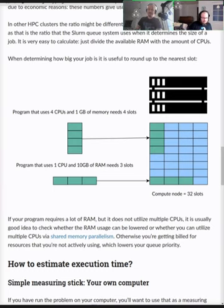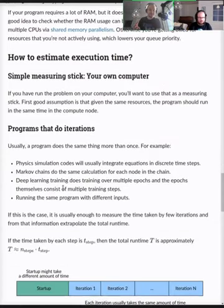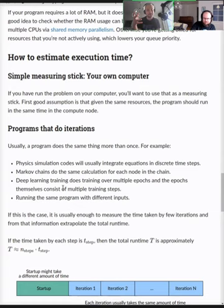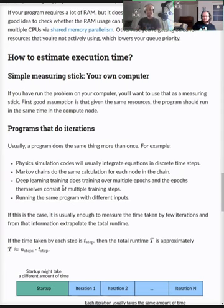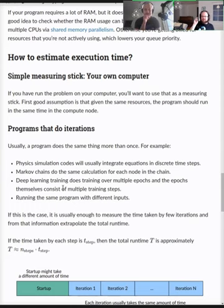Now let's talk about execution time. A good measuring stick is again your own computer: if it took a certain time on your machine, you might assume it takes the same time on the cluster. But sometimes that's not the case. Most modern laptops or desktops have slightly faster CPUs than the cluster — partly because cluster resources may be older, and also because clusters are optimized for energy efficiency rather than peak speed.